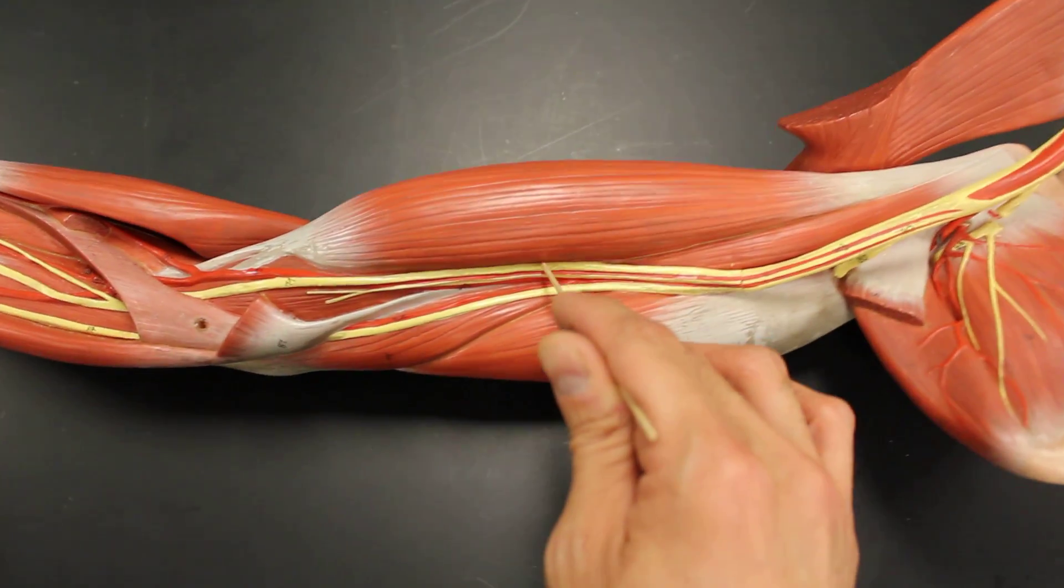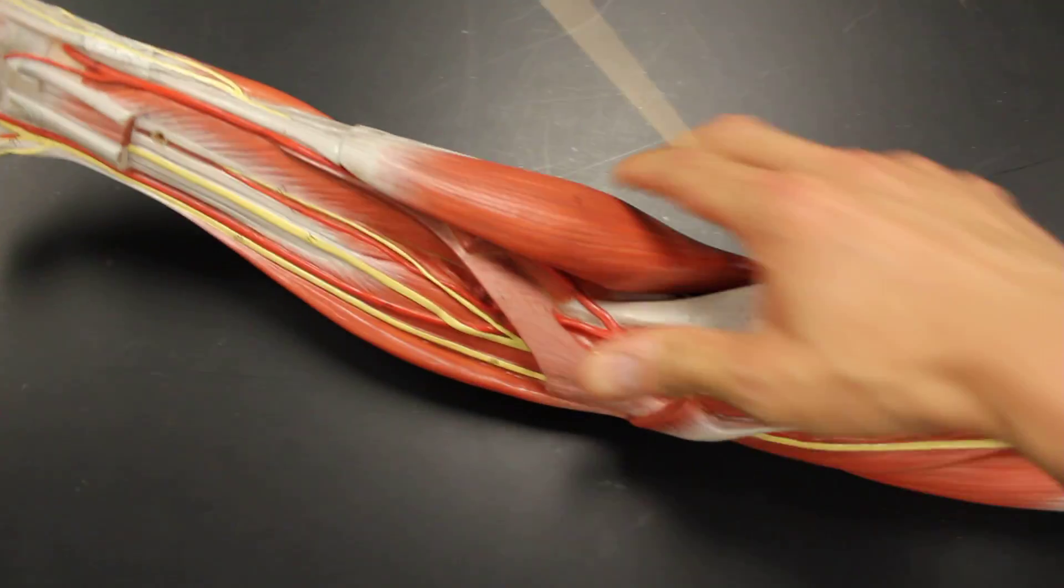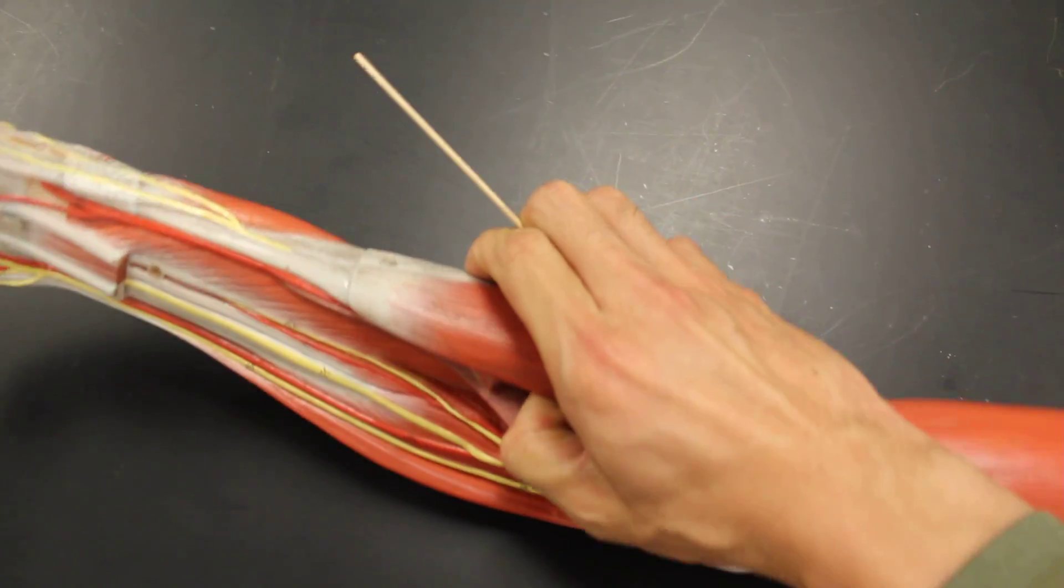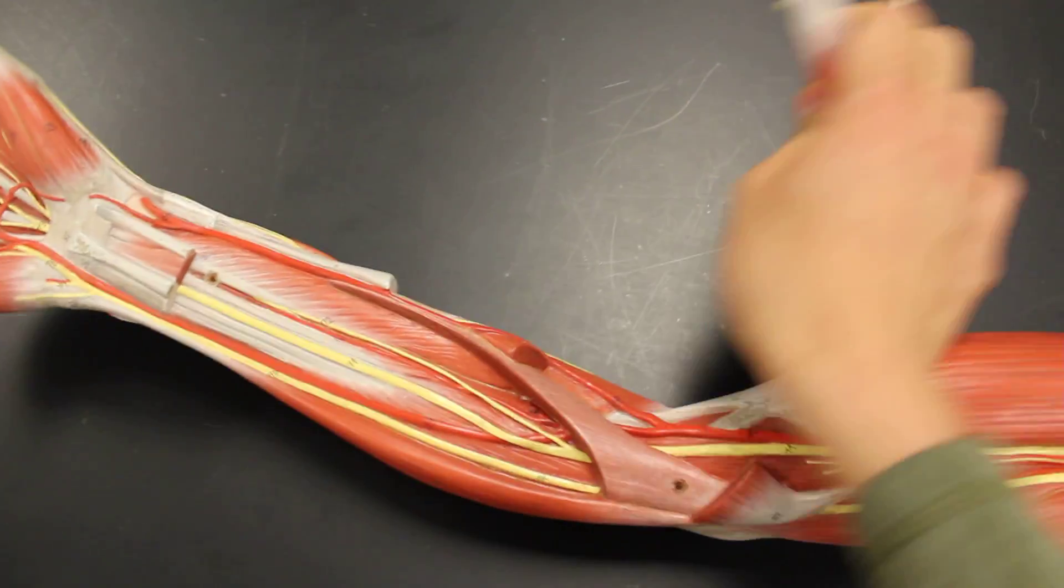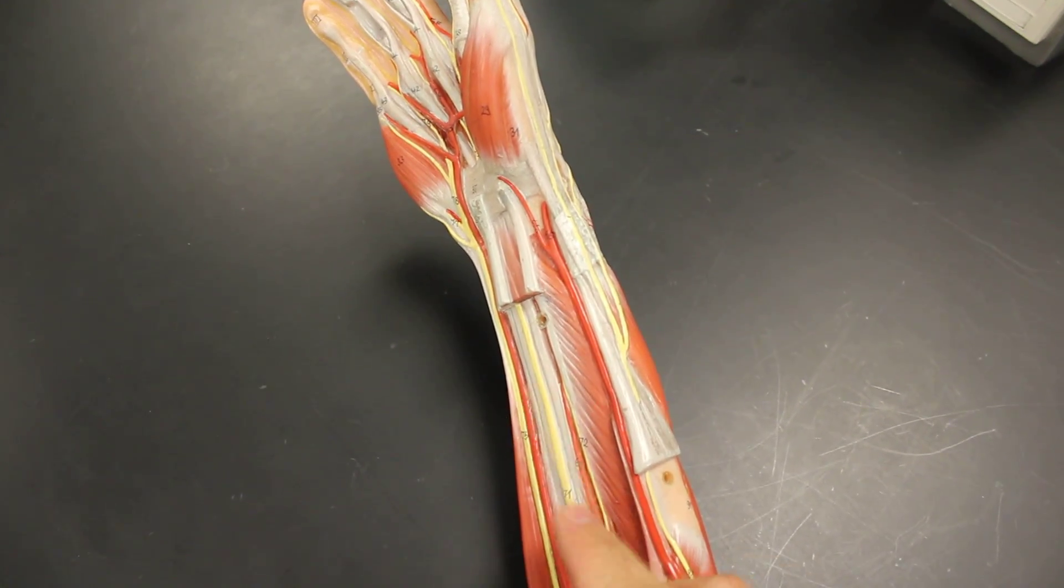As it moves into the arm, we call it the brachial artery. And then once it splits right here in the cubital fossa, we can then describe the two radial and ulnar arteries. You can see this here. This is the radial and this is the ulnar.